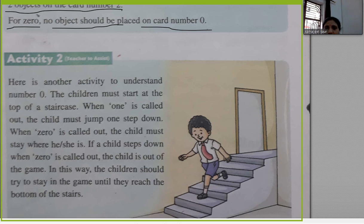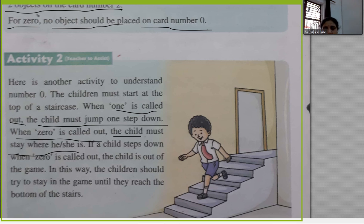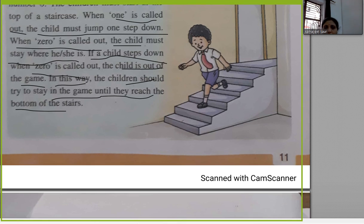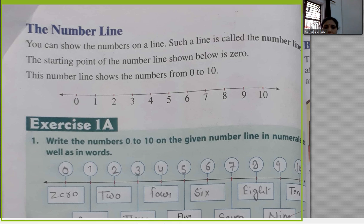Activity number two: another activity to understand zero. Children start at the top of the stairs. When 'one' is called out, the child jumps one step down. When 'zero' is called out, the child stays where they are — no movement for zero. If a child steps down when zero is called, they are out of the game. Try to stay in the game until you reach the bottom. Children at home can do this activity with their parents.